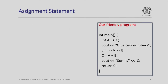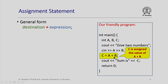Here is our friendly program which sums two numbers and outputs the result. I have highlighted this particular statement which says that C is assigned the value of A plus B. The general form of an assignment statement is a destination, then the equal-to sign, and then an expression. Note that I said C is assigned the value of A plus B, not C equals A plus B. We will see the difference between equals and assigns in a few minutes.